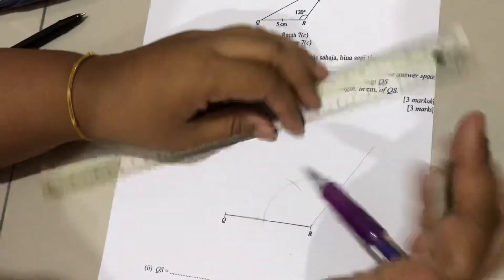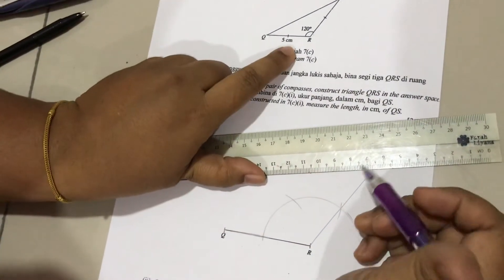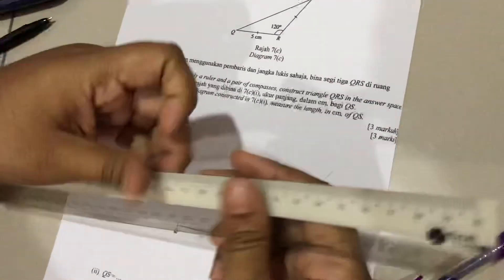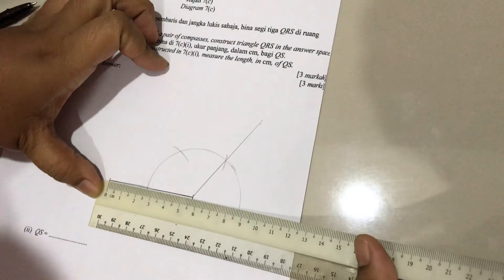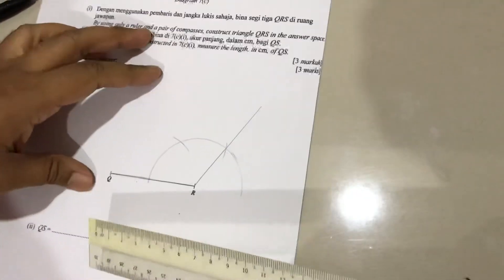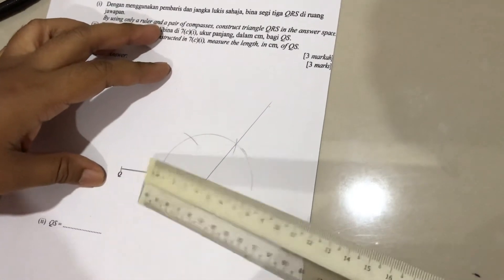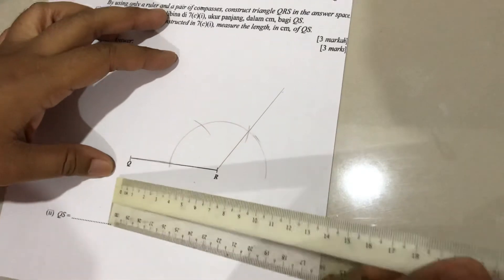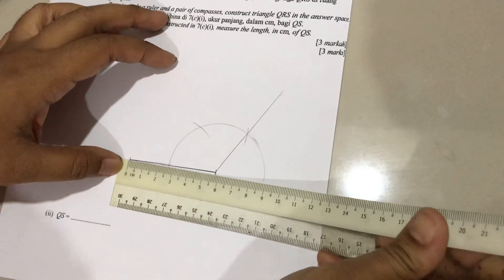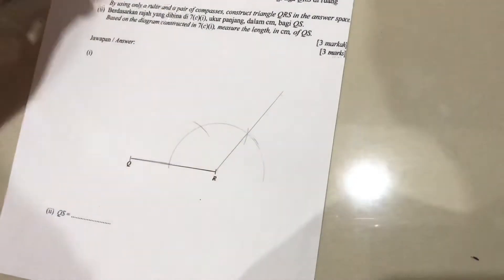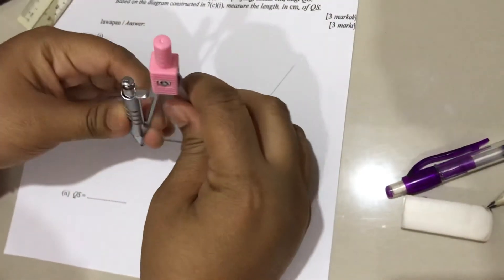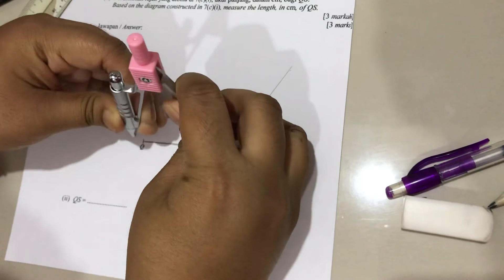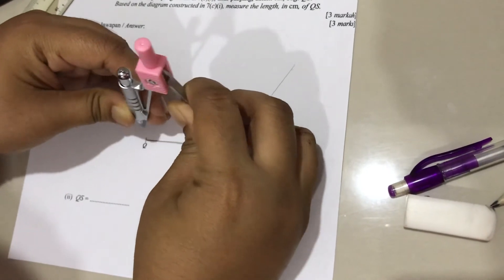After that, QR is 5 cm. This one must be 5 cm. The question gives you this, but because I scanned this picture, it's not exactly 5 cm here. So you must make sure, because this is isosceles, that side QR equals RS.